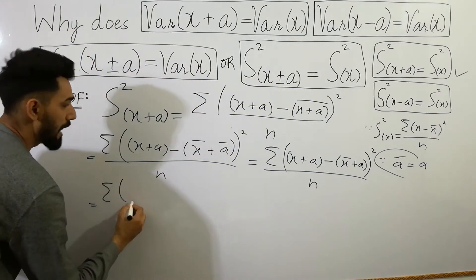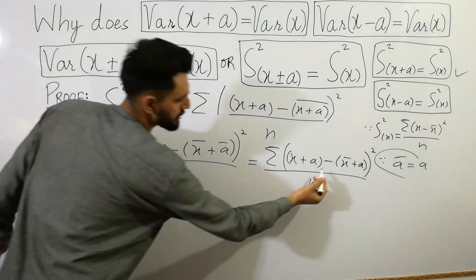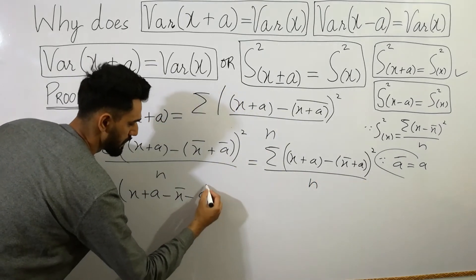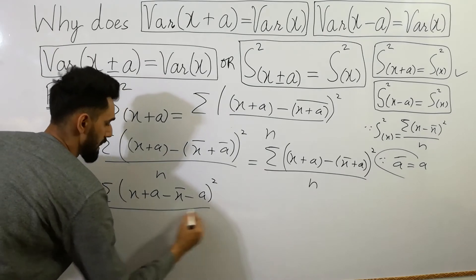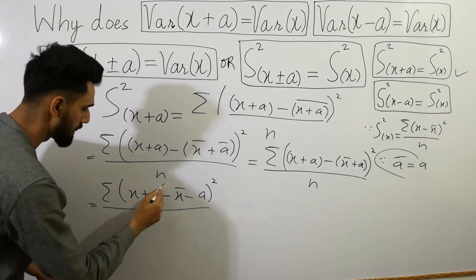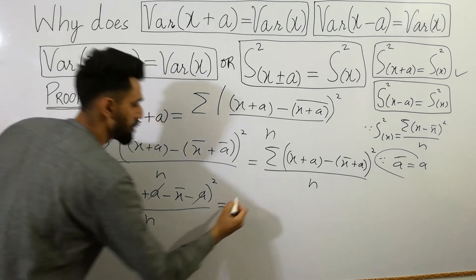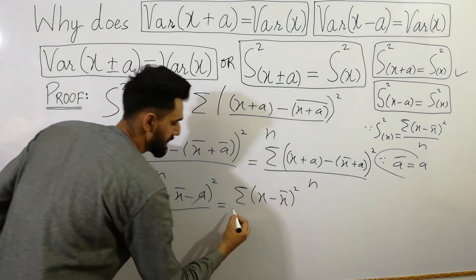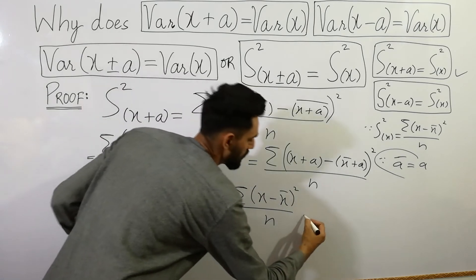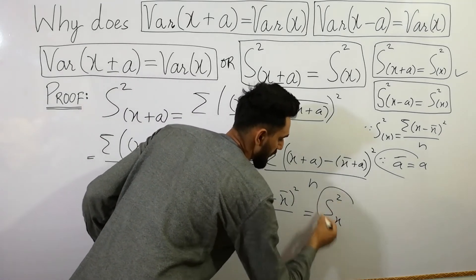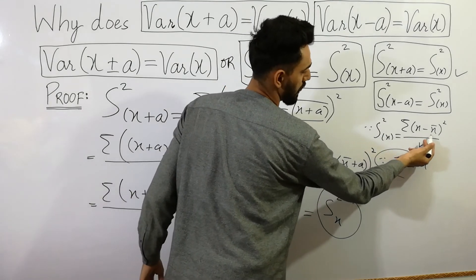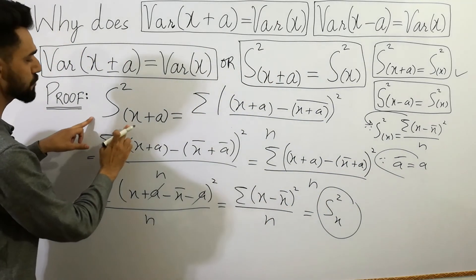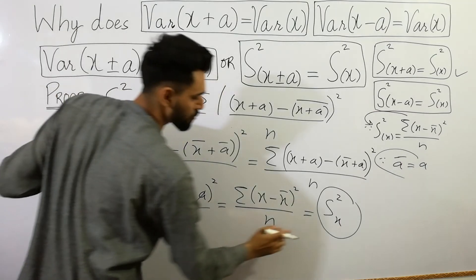Next, you can write: summation of (X plus a minus X bar minus a), completing the square, divided by n. Here the plus a and minus a cancel out, giving you summation of (X minus X bar) whole squared divided by n, which is equal to variance of X. So I have proved that variance of X plus a is equal to variance of X.